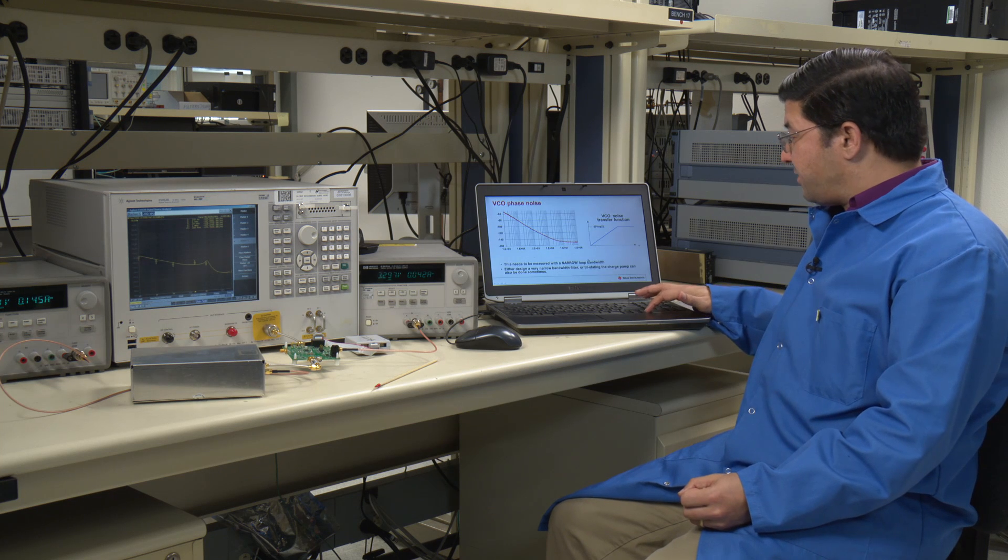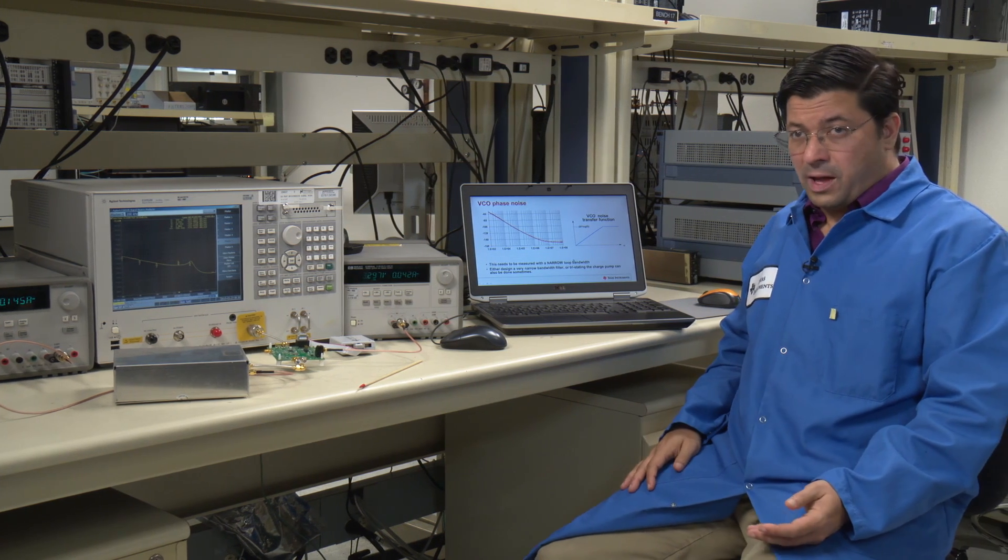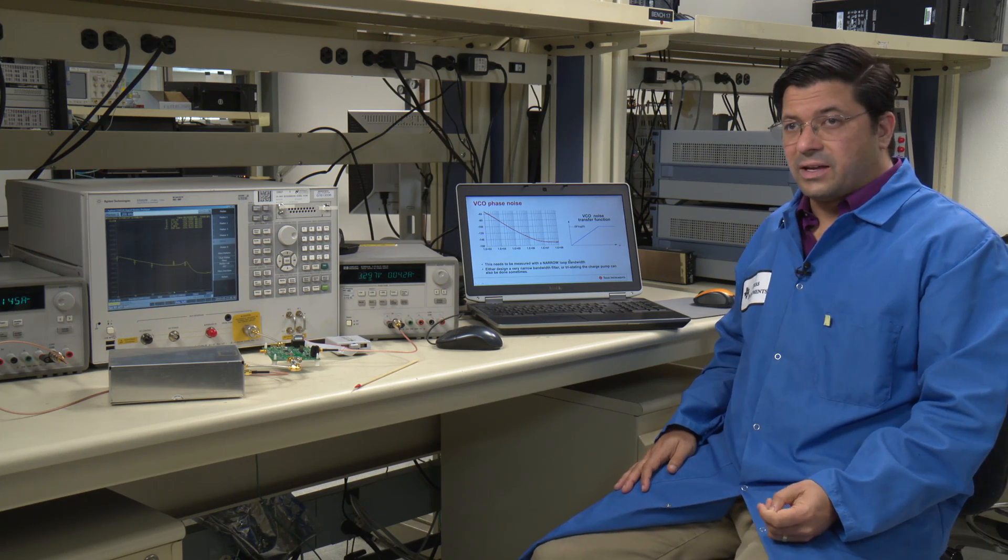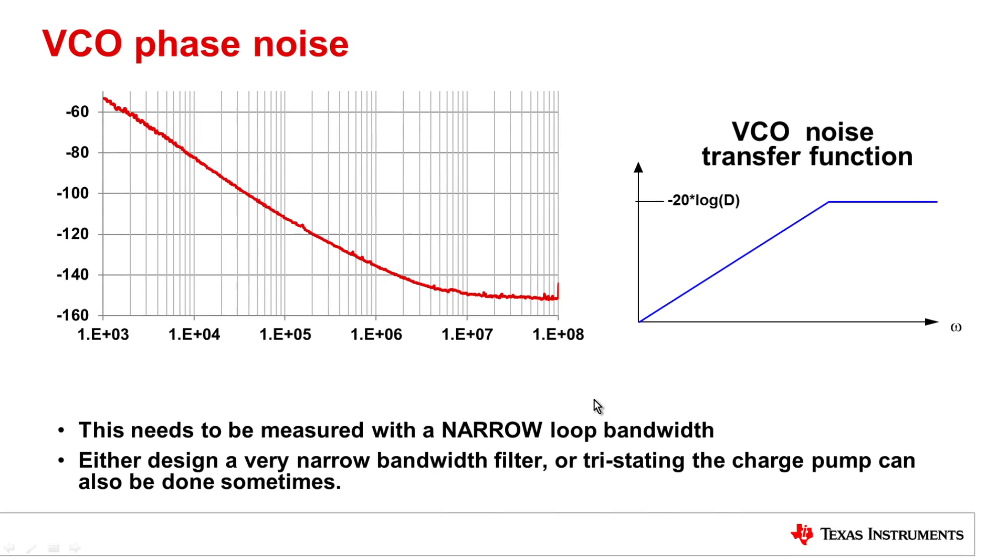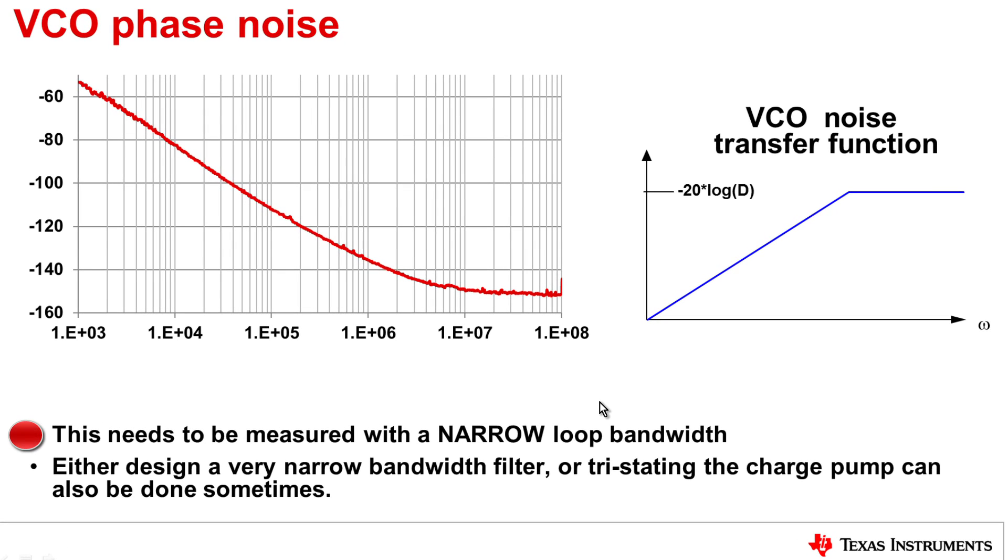Discussing VCO phase noise, here's a typical plot of what the VCO phase noise looks like. Recall the VCO phase noise is high-pass filtered. So if you want to measure it, you need to have a narrow loop bandwidth. There's two techniques to get a narrow loop bandwidth. One is to design a loop filter with a narrow loop bandwidth. Or another technique that's often used is to simply set the charge pump to either a very low gain or just turn it off completely.